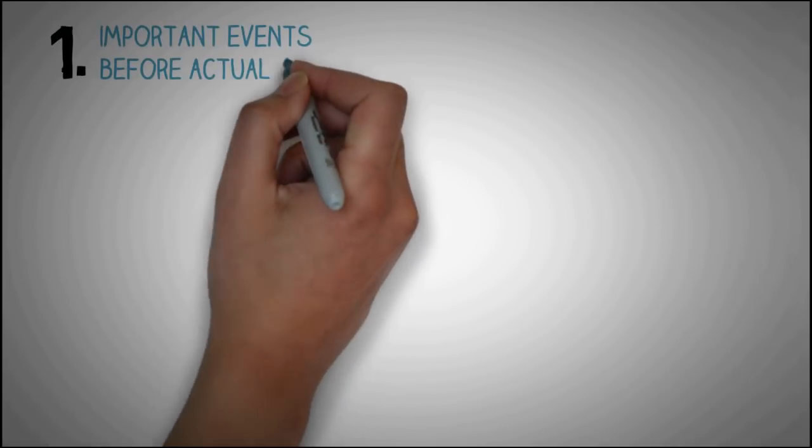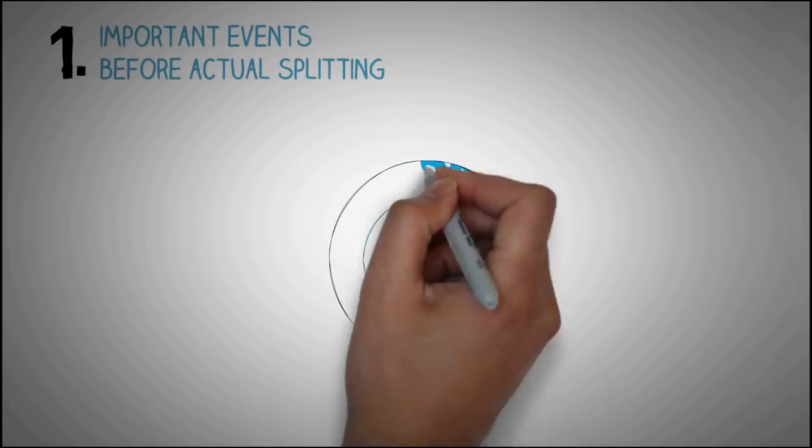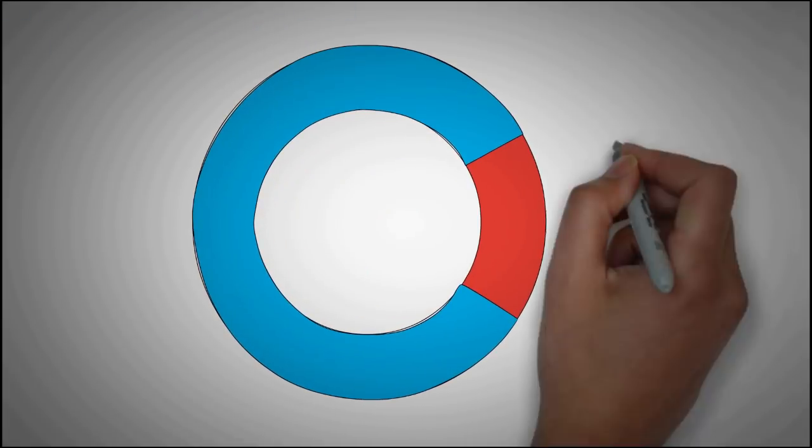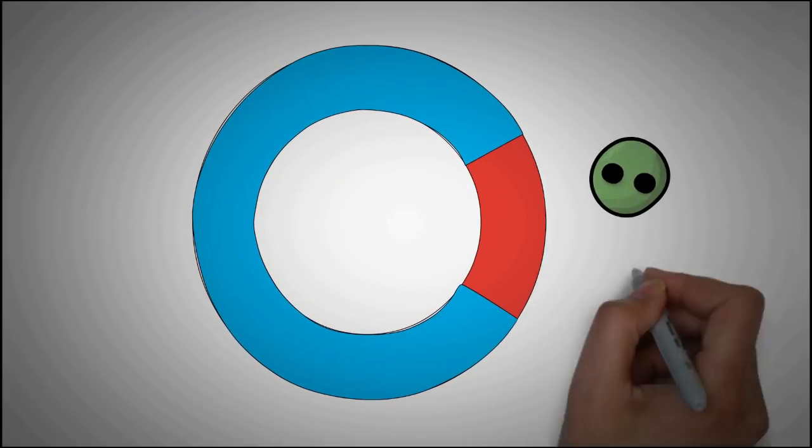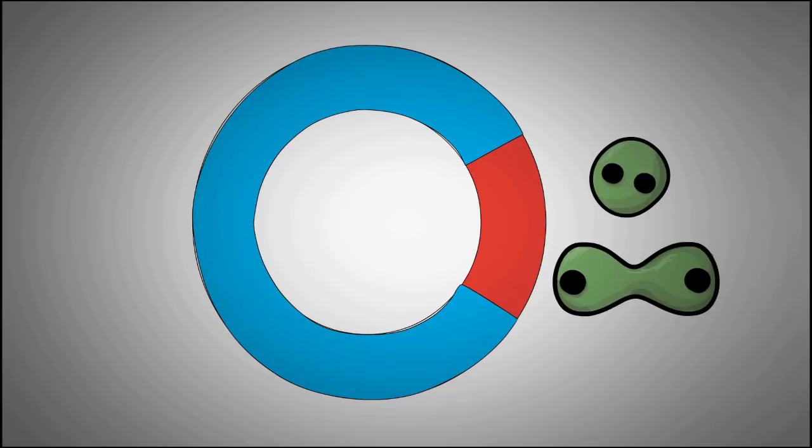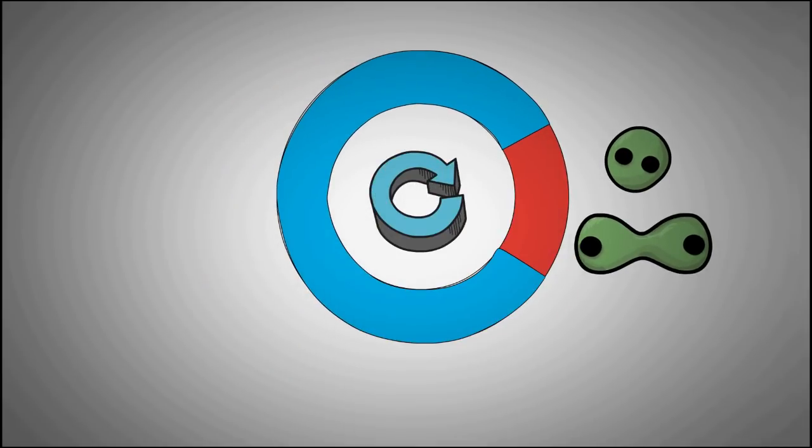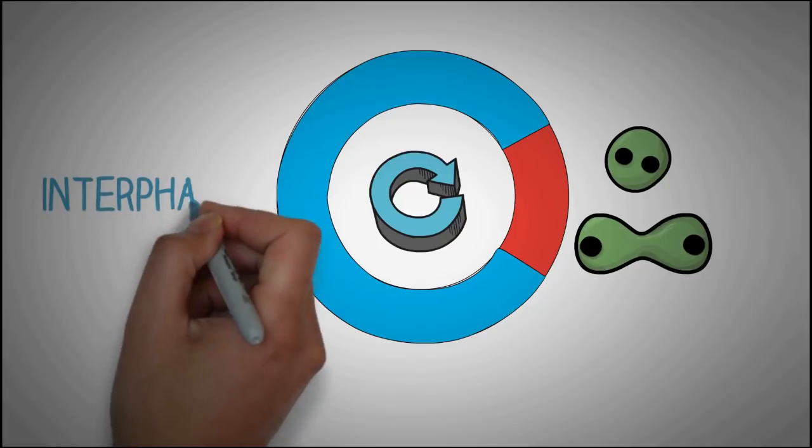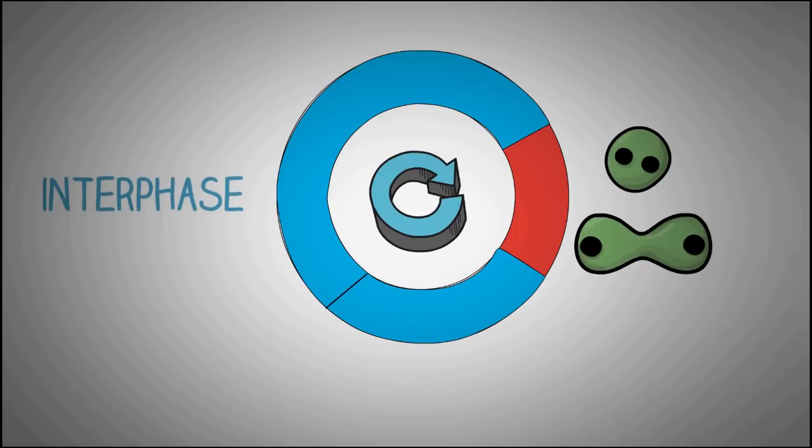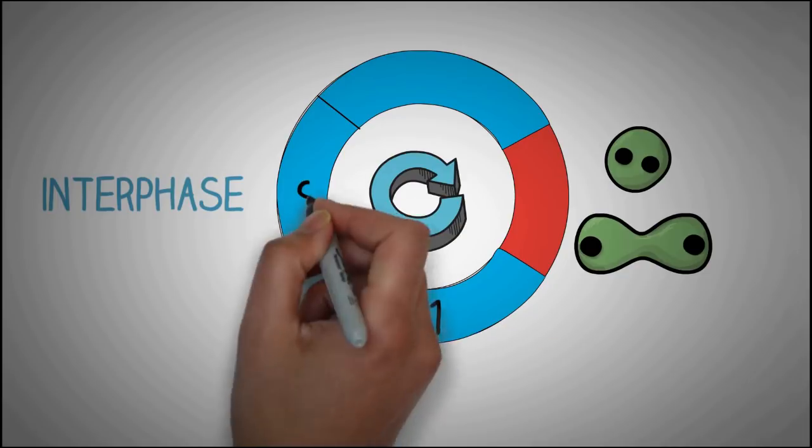So let's first look at some of the important events that take place in the cell before the actual nucleus splitting. The cell starts splitting here in this red zone. First, the nucleus splits and then the cytoplasm. Before the cell undergoes nucleus splitting, it has already undergone through the interphase, which is highlighted in blue color, which is the time the cell takes to prepare for division.